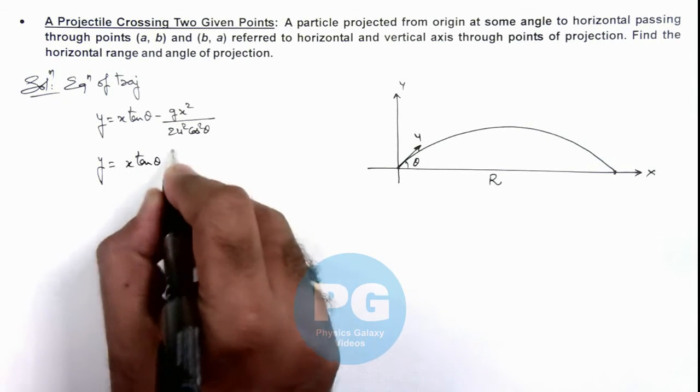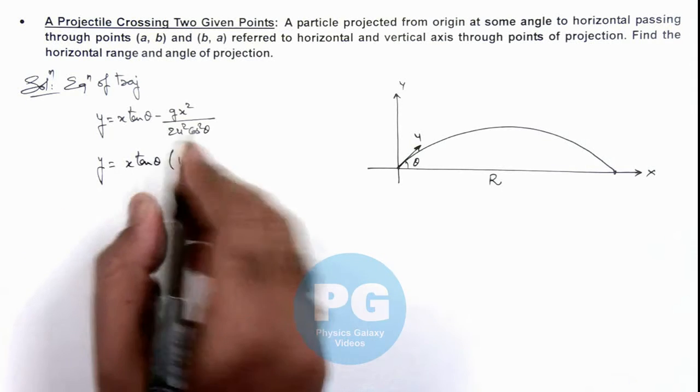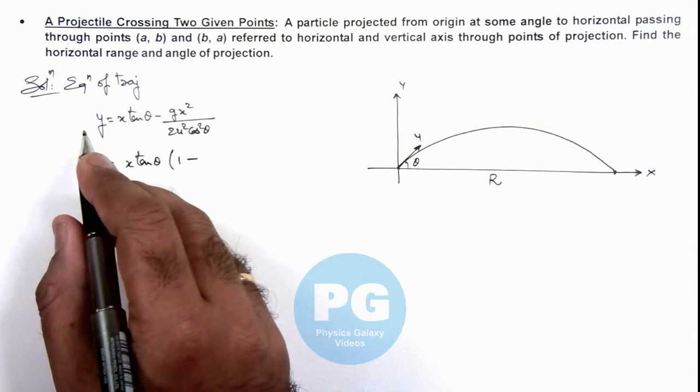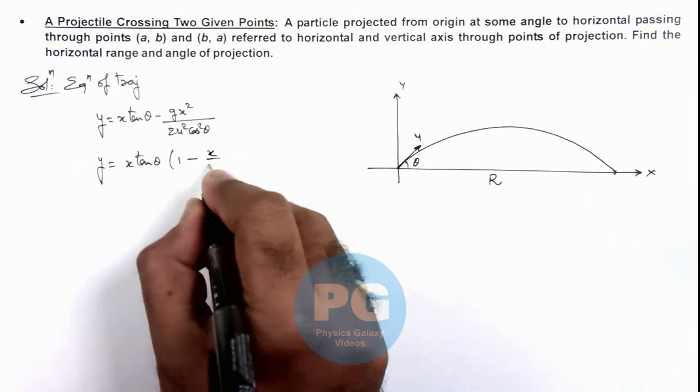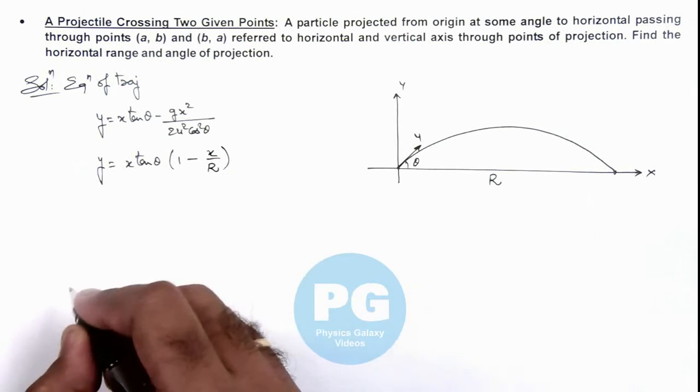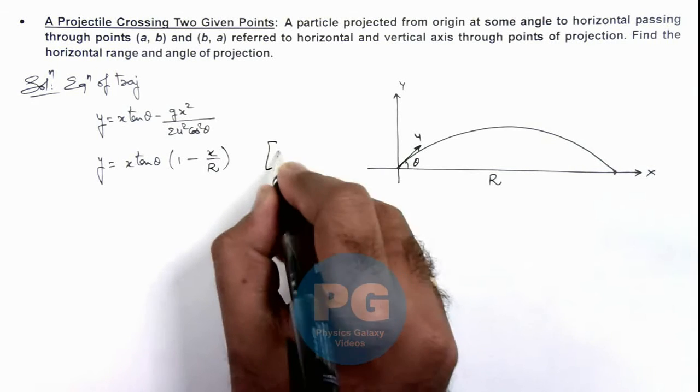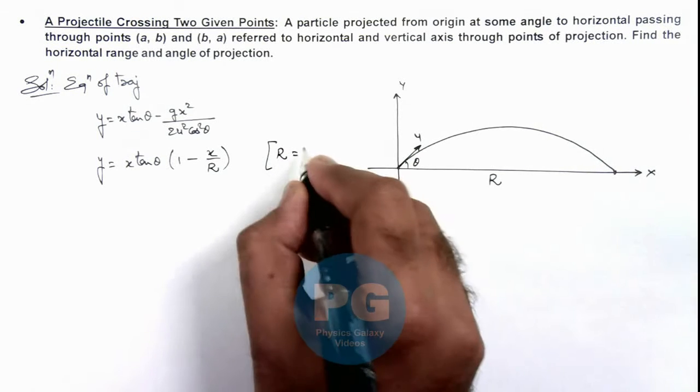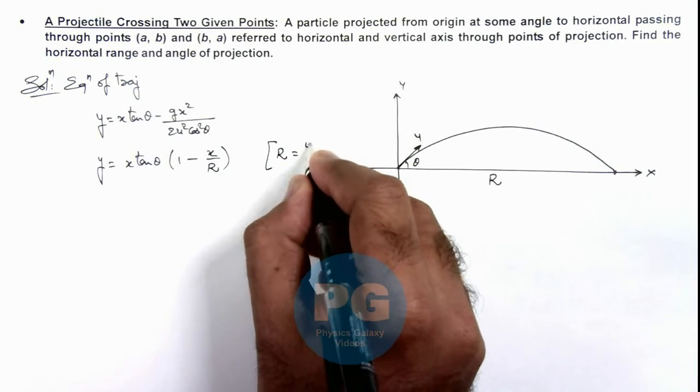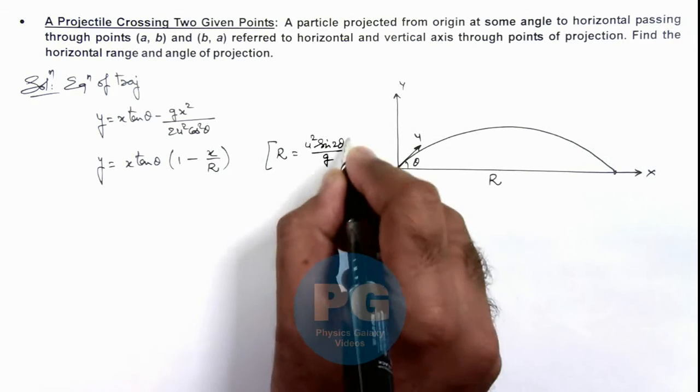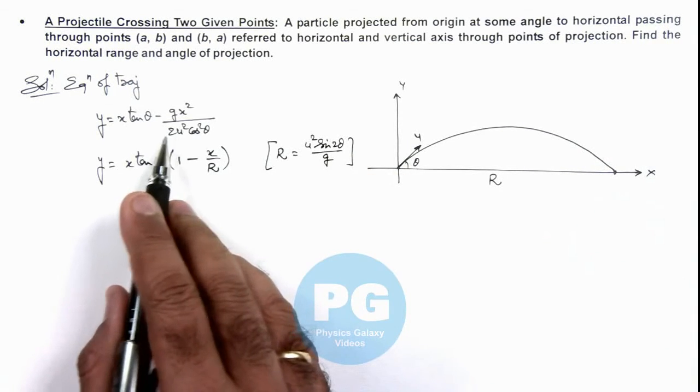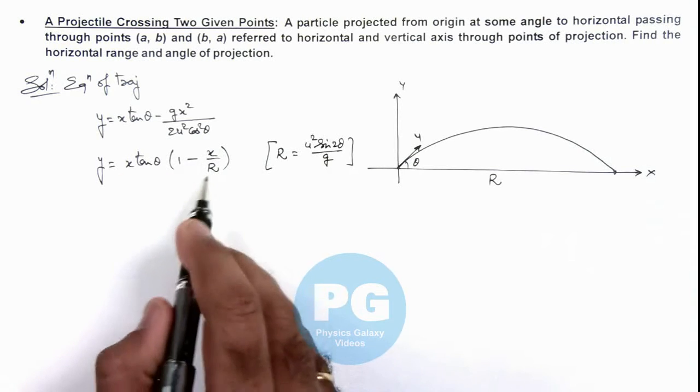x tan theta multiplied by 1 minus - here 1, x and tan theta is taken out, so this can be written as 1 minus x by range of projectile. As we know the range of horizontal range of projectile is given as u squared sine 2 theta by g. So here in denominator u squared sine 2 theta by g I am writing as R.